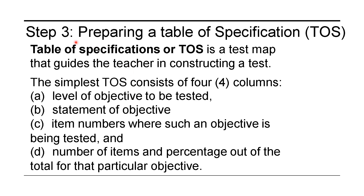For step 3, preparing a table of specifications: TOS is a test map that guides the teacher in constructing a test. Other authors call this a blueprint, where you need to outline the types of tests and the number of test items needed. The simplest TOS consists of four columns and is presented in a tabular form. The minimum requirement for a TOS is this four-column table.